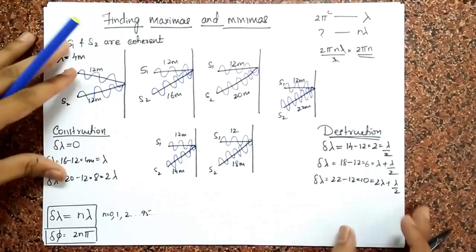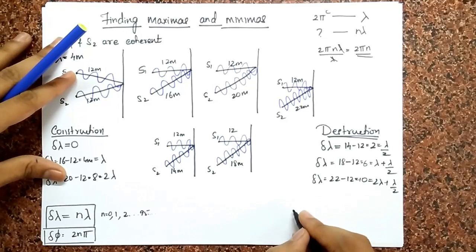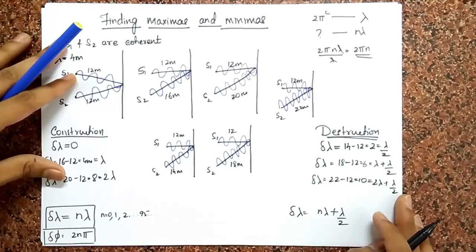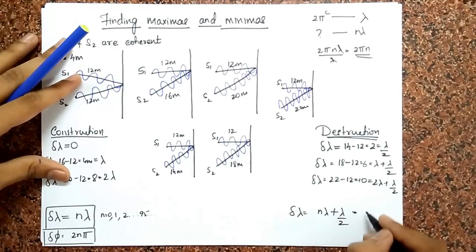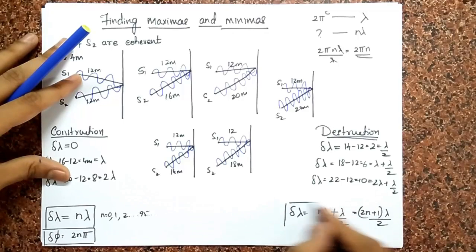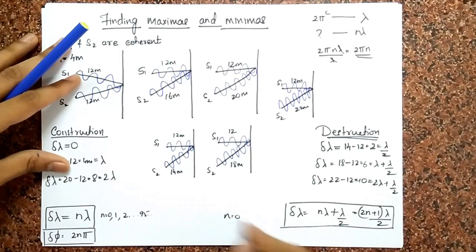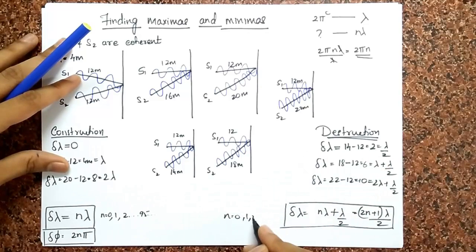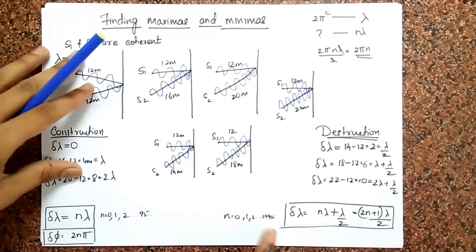Next comes 3 lambda plus lambda over 2, and so on. So I can write the general condition: delta lambda must equal n lambda plus lambda over 2, or equivalently, (2n + 1) times lambda over 2. That is the condition for destructive interference, where n can be 0, 1, 2, or any integer.